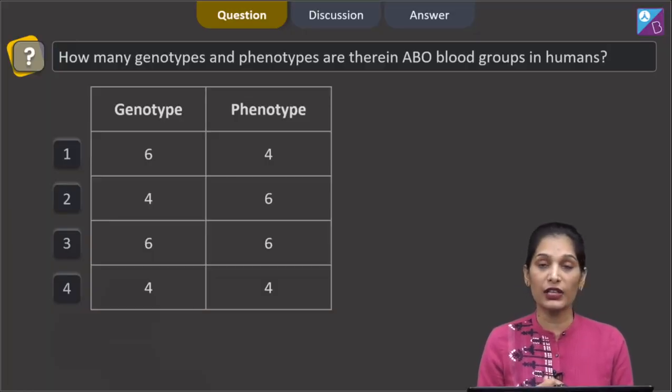How many genotypes and phenotypes are there in A, B, O blood groups in humans?